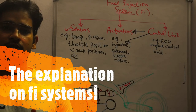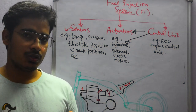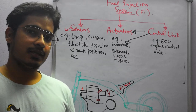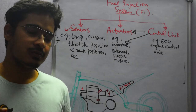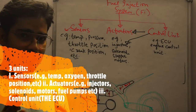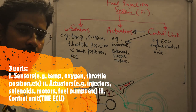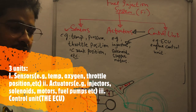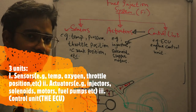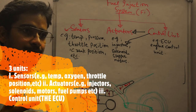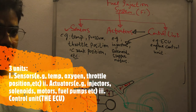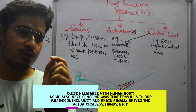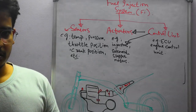Hello guys! This video explains the fuel injection system, which you currently see in almost all automobiles, whether it's a bike or a car. A fuel injection system has basically 3 major units which perform different functions to work as a system. These 3 subsystems are: first, the sensor; second, the actuator; and third, the control unit. You can relate it to your human body, which has multiple sensors in your sense organs.